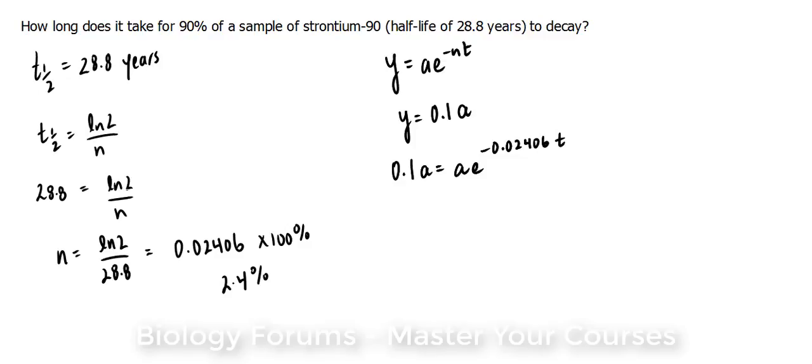What you'll notice is that you have an a on the left side and a on the right side. So if you divide both sides by a, we end up with 0.1 is equal to e to the power of negative 0.02406·t.